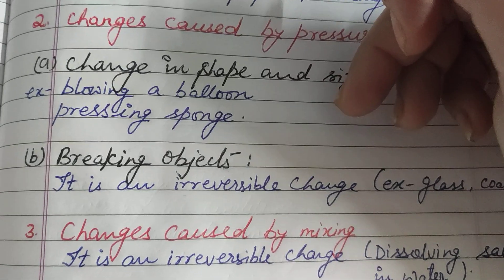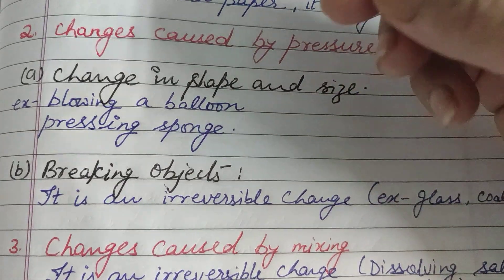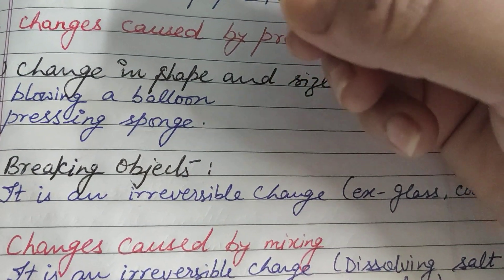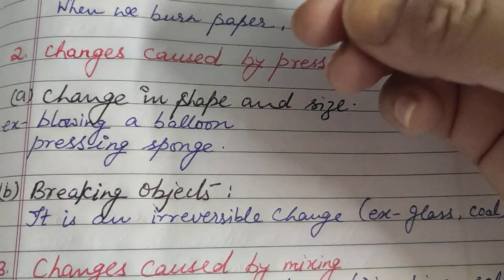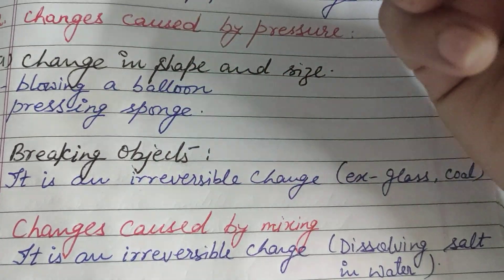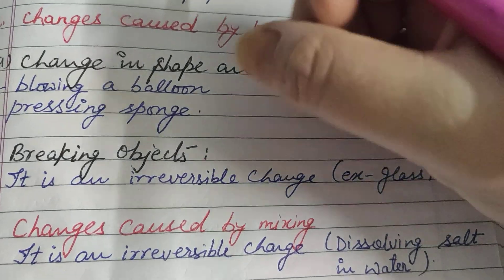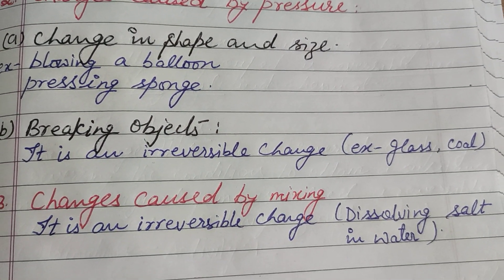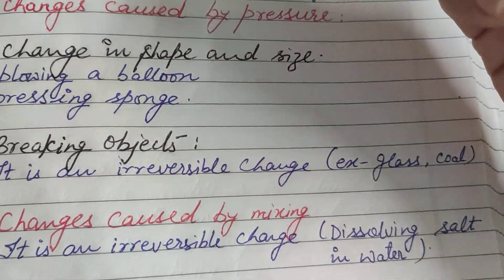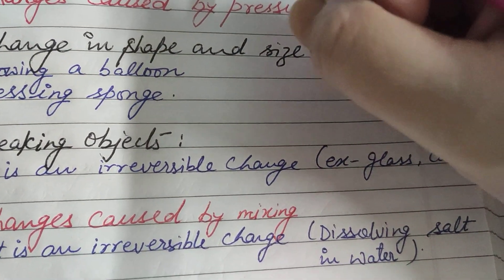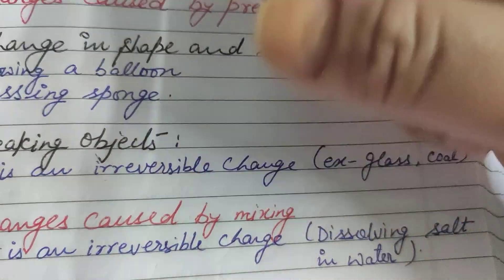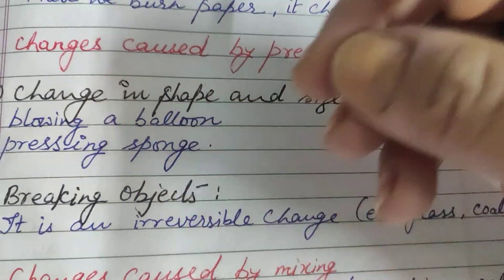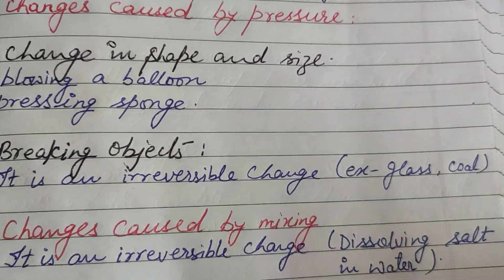Change in shape and size. When we blow up a balloon, observe the change in shape and size of the balloon. The shape and size of the balloon will change. The same way, when we use a fluffy solid like a cushion, a ball, or a sponge — when we press it, the shape changes.